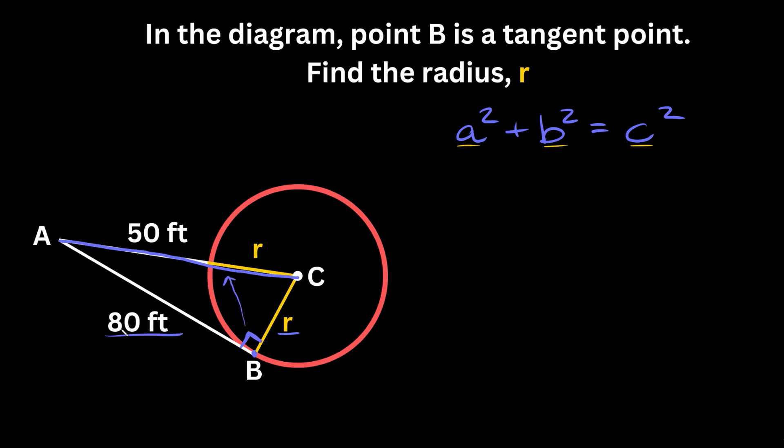Let's plug in our two shorter sides to our equation. We have 80² + R² = C, which is 50 + R, so we're going to say (50 + R)².